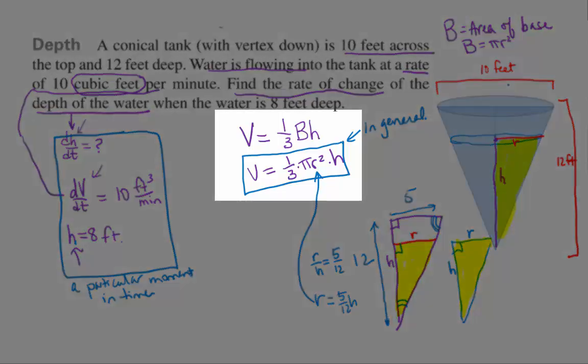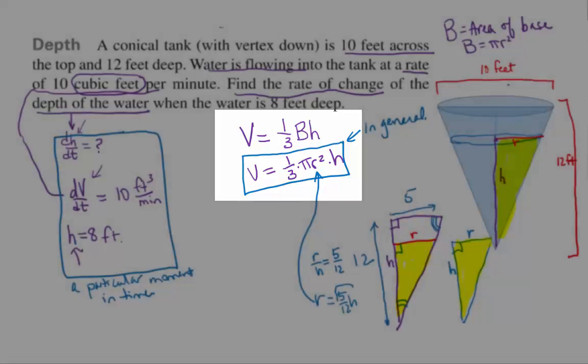We don't want to differentiate both sides of this volume formula with respect to time, because we have an R in there we don't know how to deal with. So instead, let's go ahead and write what R is equal to in terms of H. And that makes everything work out nicely.